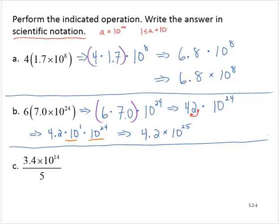Exercise C, 3.4 times 10 to the 14th divided by 5. That would be the same as 3.4 over 5, and then times 10 to the 14th over 1, if we really wanted to think of that 1 being there.